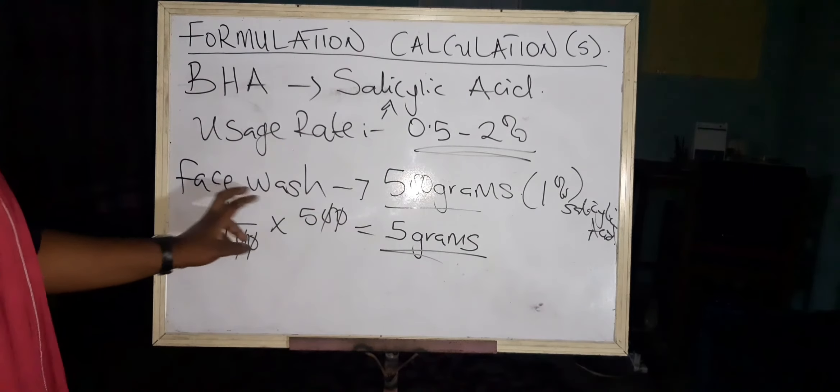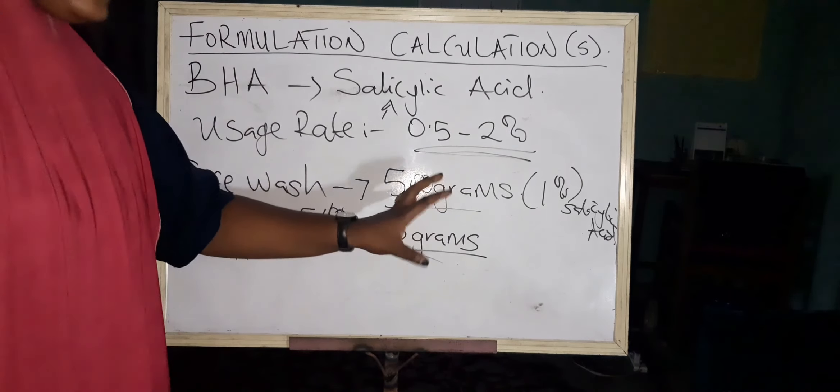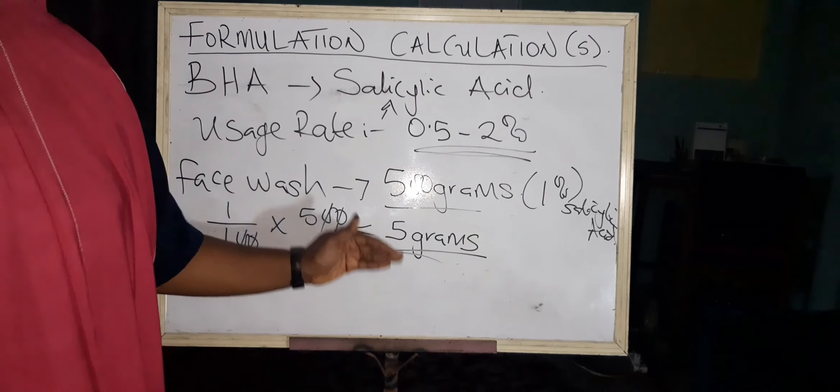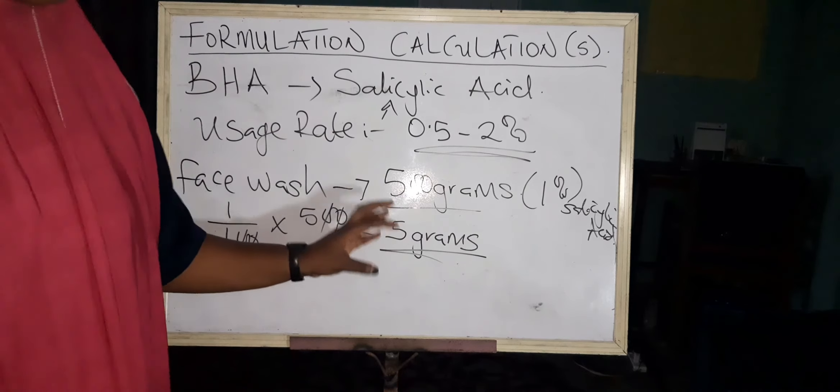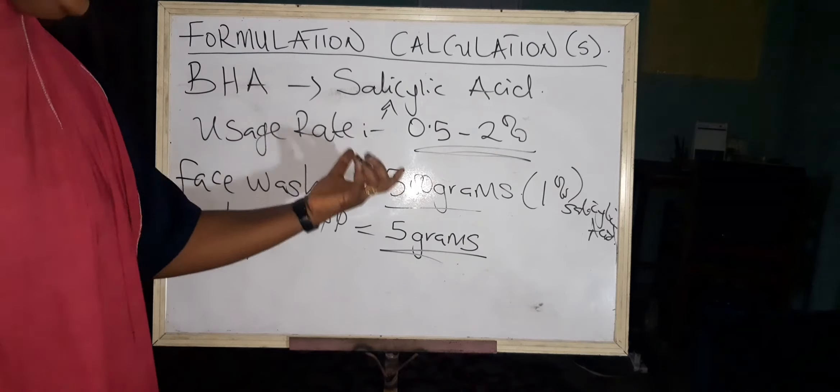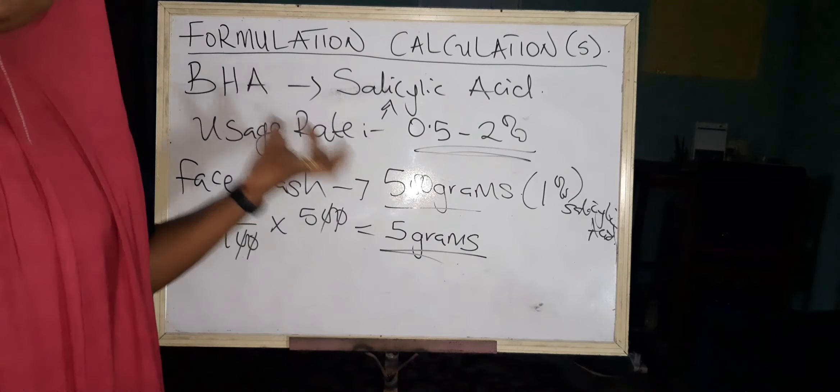So this is how to calculate one percent of salicylic acid in a 500 grams face wash—5 grams will give you one percent. Very important again: your credibility of ingredients matters. The credibility of ingredients matters in the usage rate. Make sure when you're buying ingredients, you're buying from a reliable vendor with good ingredients that are not adulterated.